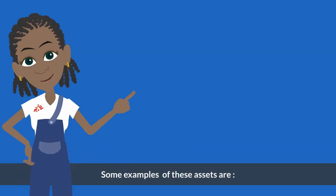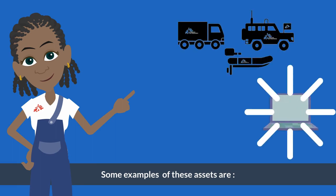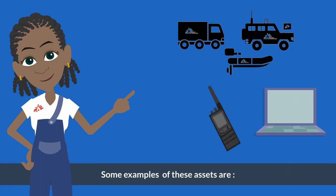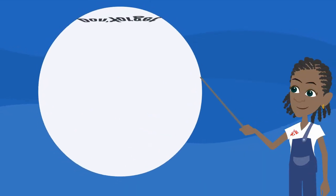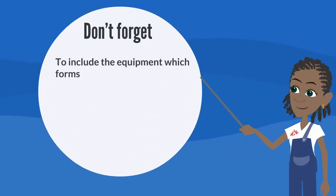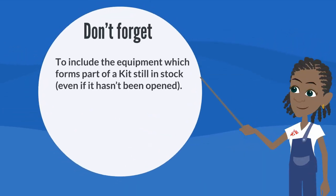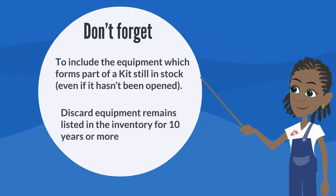Some examples of these assets are vehicles, laptops, communication equipment, and biomedical equipment. Don't forget to include equipment which forms part of a kit still in stock, even if it hasn't been opened. And discard equipment that remains listed in the inventory for 10 years or more.